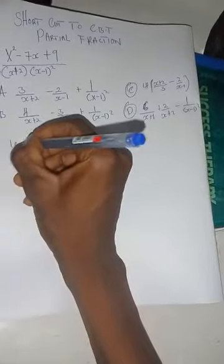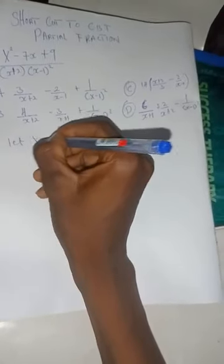Now let's get down to business. The best way to solve partial fraction when it comes to CBT is just put the value of X in the given question as zero. So let X equals zero.